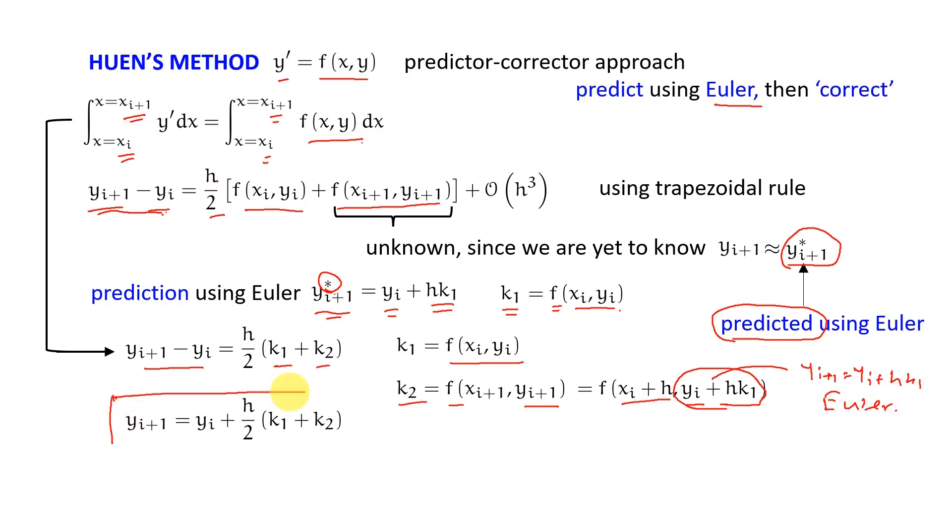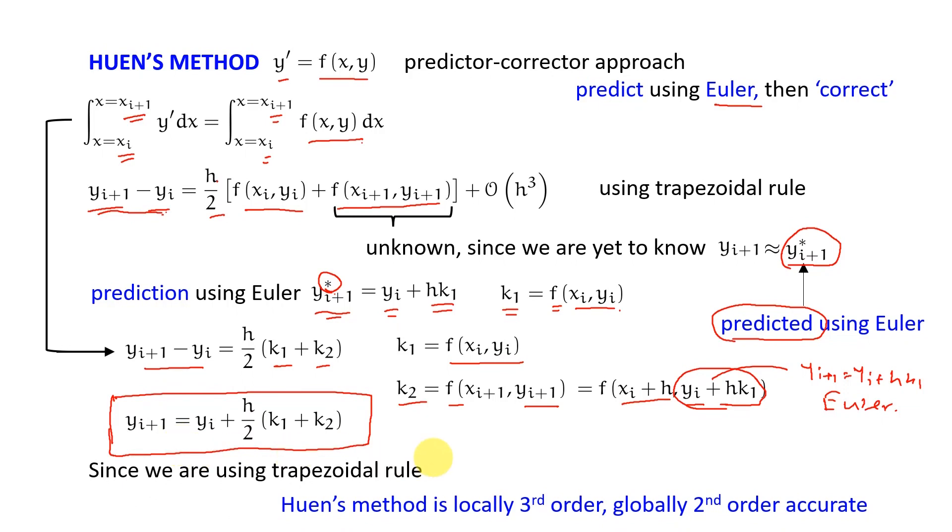You can see this overall technique now. This is my difference equation. The good thing about this difference equation is that we are using trapezoidal rule. This method we can show that this will be locally third order accurate and globally second order accurate. So we have one order higher accuracy than Euler, but the method is still explicit.